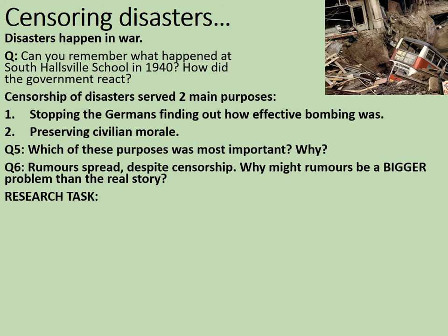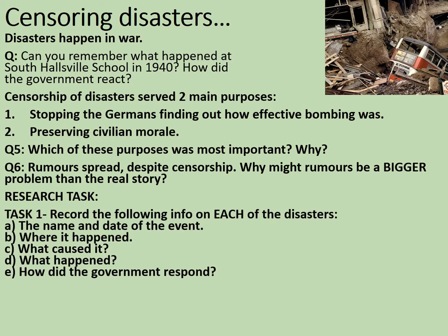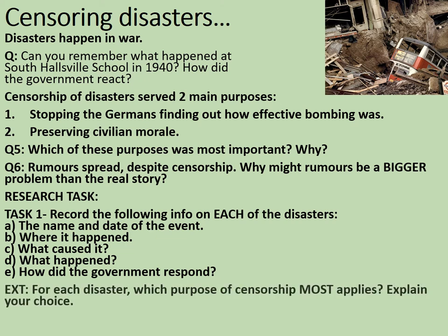Here's how the research task is going to work. Task 1: record the following information for each of the disasters — the name and date of the event, where it happened, what caused it, what actually happened, and how the government responded. Remember to include the numbers killed. After looking at all of them, for each disaster decide which purpose of censorship most applies: stopping the Germans finding out how effective their bombing was, or preserving civilian morale. If both apply, choose the one which is most important.